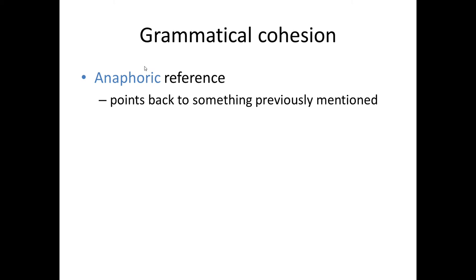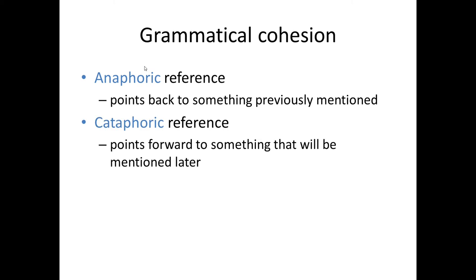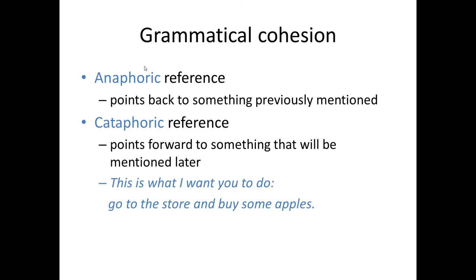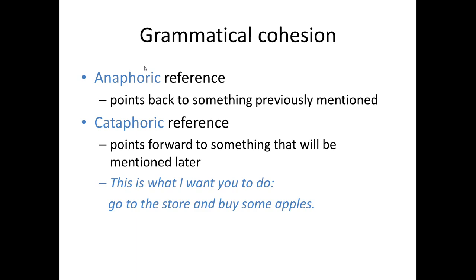It's also possible for a word to point forward in a text to something that will be mentioned later. This is called cataphoric reference. Consider: 'This is what I want you to do. Go to the store and buy some apples.' Here 'this' means 'go to the store and get some apples', which occurs in the following part of the sentence, and so again we get a link between the two parts.